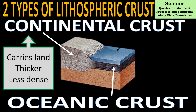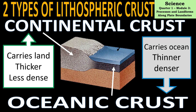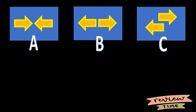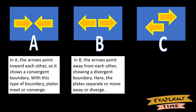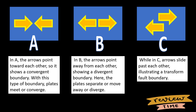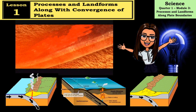Continental crust carries land — it is thicker yet less dense compared to oceanic crust. Oceanic crust carries water. As we review how the lithospheric crusts move, in illustration A the arrows point toward each other, showing a convergent boundary where plates meet. In B, the arrows point away from each other showing a divergent boundary. In C, arrows slide past each other, illustrating a transform fault boundary.